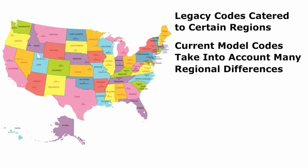For example, certain coastal states need more restrictive seismic building code provisions to allow for the many earthquakes in those areas, and the northern states need codes to allow for long periods of below freezing temperatures. All these various requirements are now in the current building codes.